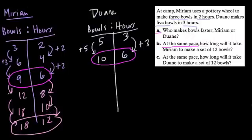Although I think I read the question wrong. It says, how long will it take Miriam to make twelve bowls? Oops, sorry about that. I read that wrong. Here is the answer. It's eight hours to make twelve bowls. It's right there. We passed that early on.